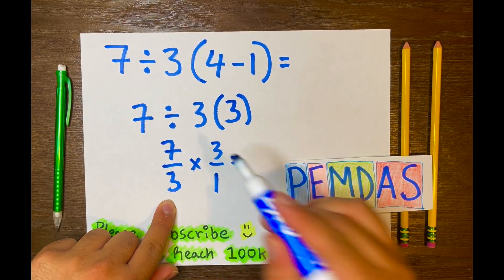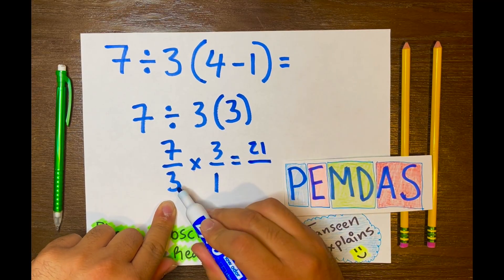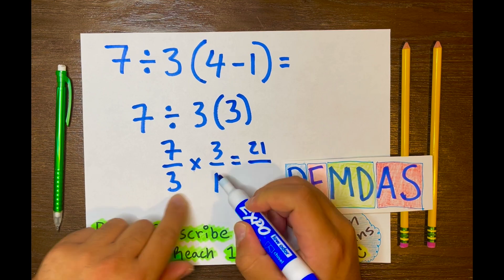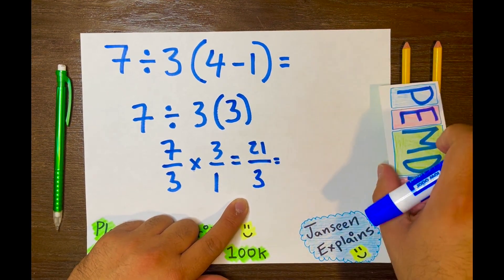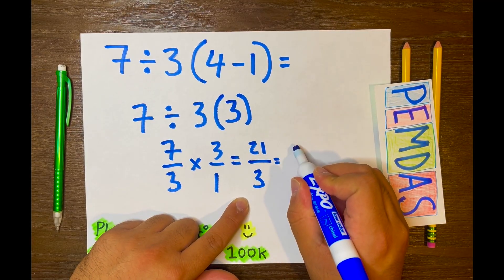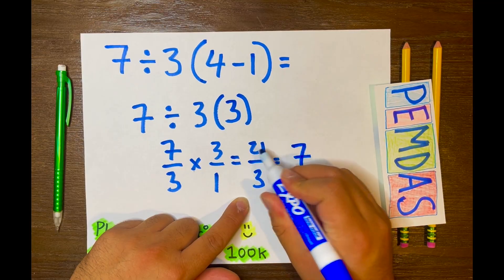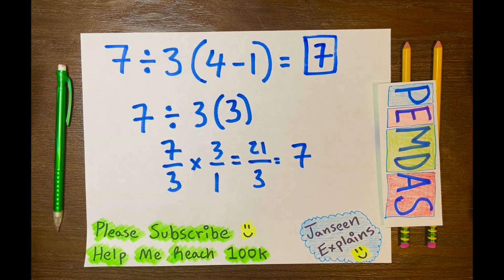So 7 times 3 is 21 over 3 times 1 which is 3. And 21 divided by 3 is 7. 7 times 3 is 21. So the answer is 7. And there you go.